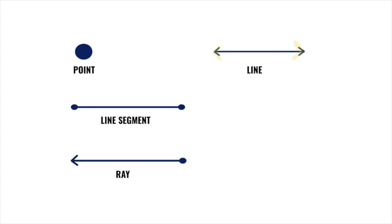The difference between a line and a line segment, our next term, is that a line segment is part of a line. Notice that it doesn't have arrows. It has two points on both ends, showing that it has a start point and an end point. It does not go on and on in either direction.